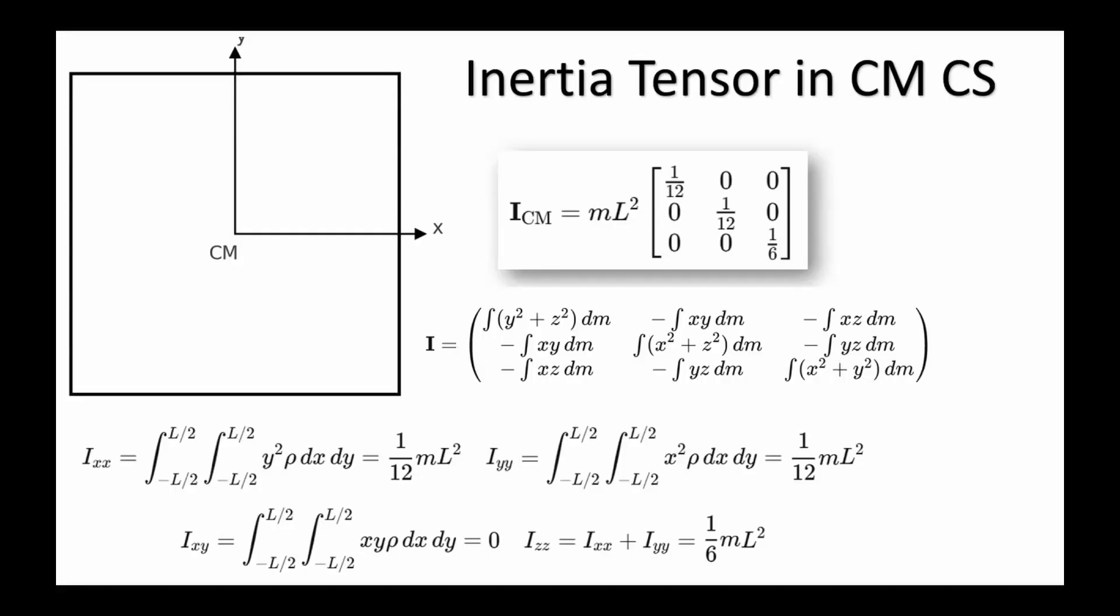On this slide we calculate the moment of inertia tensor for the plate in the center of mass coordinate system. This is the moment of inertia tensor. The diagonal entries are the principal moments of inertia showing how mass is distributed about the x, y, and z axes of the chosen coordinate system. The off-diagonal elements called products of inertia indicate asymmetries and are zero when the object has reflection symmetry about the coordinate planes. This is the general moment of inertia tensor for any object.